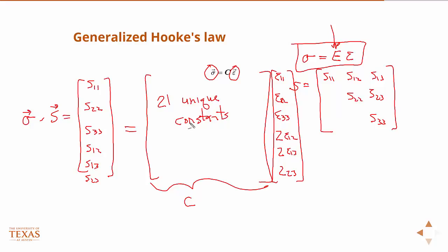That would be a transversely isotropic material. And this type of material would have five independent constants. So you'd have to do five experiments to characterize it. But in this class, we're just going to deal with isotropic materials.